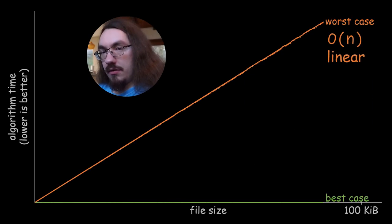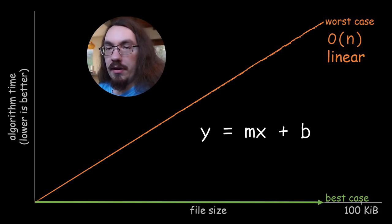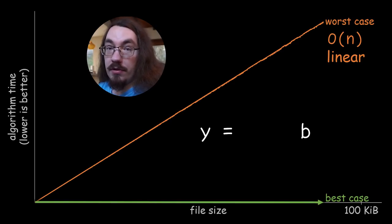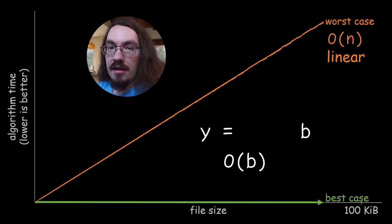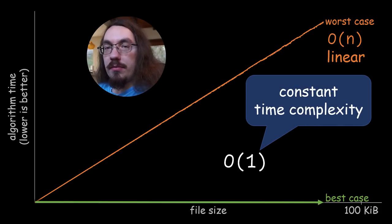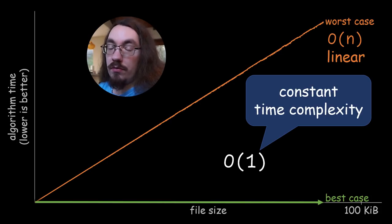But that's in the worst case. What about the best case? In the best case, we also have a straight line, but our slope is zero. Because our slope is zero, the x term disappears and we're just left with b. In big O notation, we don't care about constant factors — we treat all constants as if they were one. So in the best case, our algorithm is O(1), which means constant time complexity: the algorithm's time is constant regardless of input size, but only in the best case — if the error happens right at the beginning of the file.